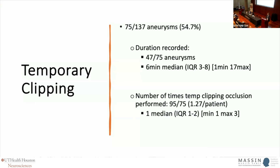The median duration of temporary clipping was six minutes, ranging from about three to eight minutes. The maximum in one case was 17 minutes. Typically, temporary clipping was done just one time, with a few cases where multiple rounds were performed, reflecting multiple rounds of repositioning of the primary aneurysm clip.